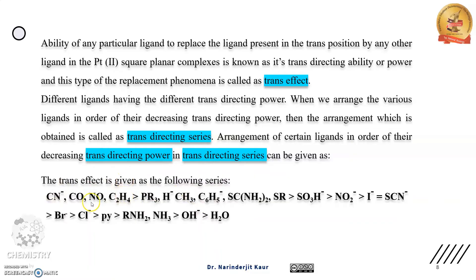यहाँ पर जो trans effect है वो इस series में दिया हुआ है। इस series में cyanide, carbonyl, nitrosyl, ethylene जैसे ligands — they are powerful trans directing ligands. They have a higher trans directing ability as compared to ammonia, hydroxide, and water ligands, which are poor trans directing ligands.